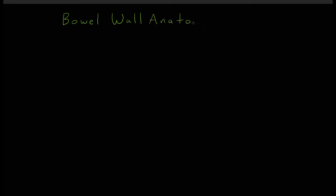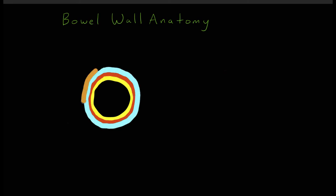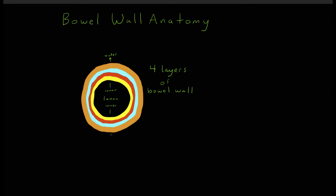Before we begin a discussion of the technical aspects of bowel anastomosis, it is important to describe the anatomy of the bowel wall. The bowel is composed of four concentric layers surrounding the bowel lumen. The innermost layer closest to the bowel lumen is the mucosa. Moving outwards, the next layer is the submucosa — this layer is the strength layer of the bowel. In other words, this layer has the greatest tensile strength and is a critical layer suited for holding staples or sutures.